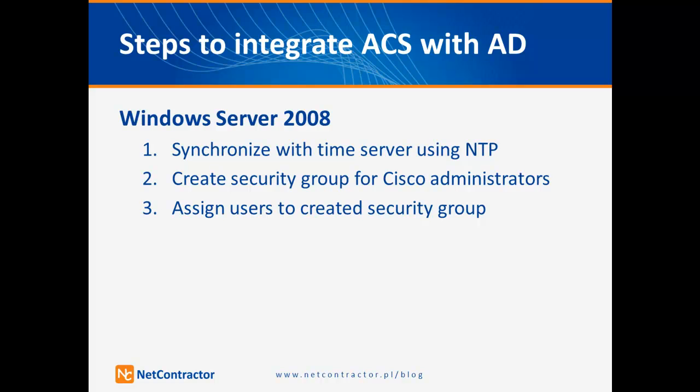Windows Server needs to be synchronized with an external time source based on NTP. My server is already configured, but I will present you the step-by-step procedure. The second step is to create a security group in Active Directory where you can place specific users that will later have specific privileges, for example to log in to a specific group of routers. The last step is to create a user and assign that user to the previously created security group.